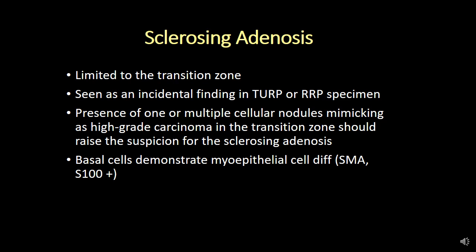Sclerosing adenosis is typically limited to the transition zone. It is a form of benign prostatic hyperplasia, so typically seen as an incidental finding in a TURP specimen or radical prostatectomy specimen. An important point to keep in mind is that when you have presence of one or multiple cellular nodules which mimic high grade prostate cancer in the transition zone, that should always alert you for the diagnosis of benign sclerosing adenosis.